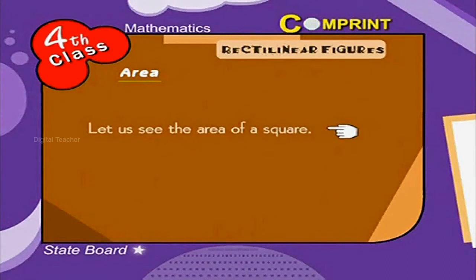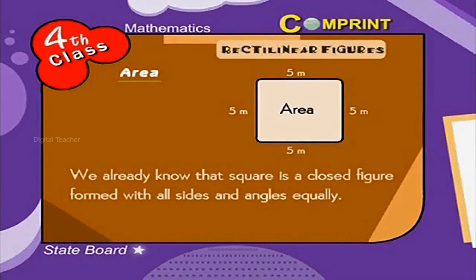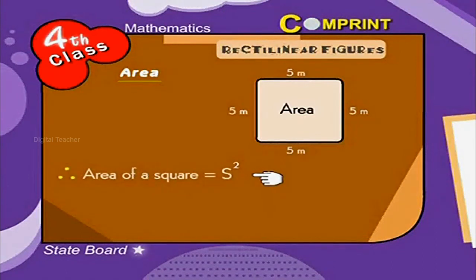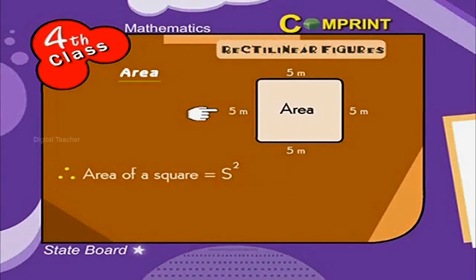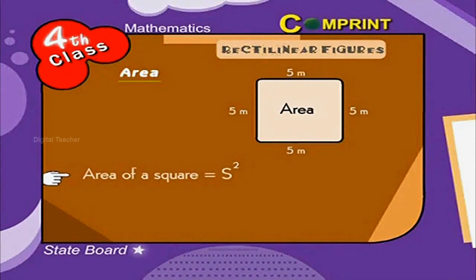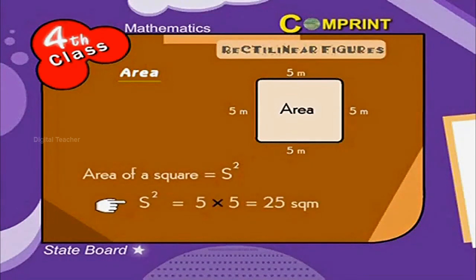Let us see the area of a square. We already know that a square is a closed figure formed with all sides and angles equal. Therefore, area of a square is equal to S square. For example, the side of a given square is 5 meters. Find the area. Area of a square is equal to S square, that is 5 into 5 is equal to 25 square meters.